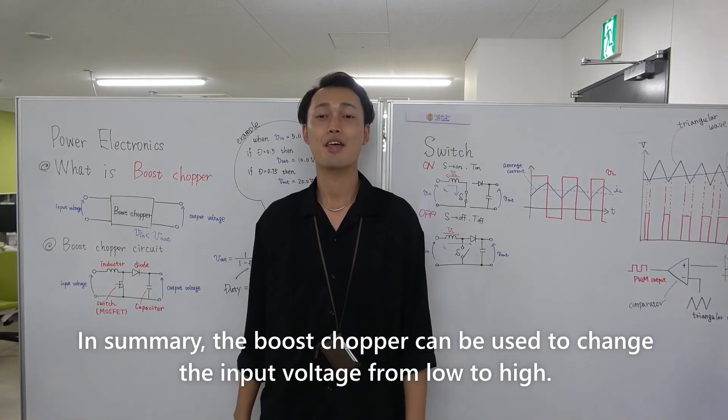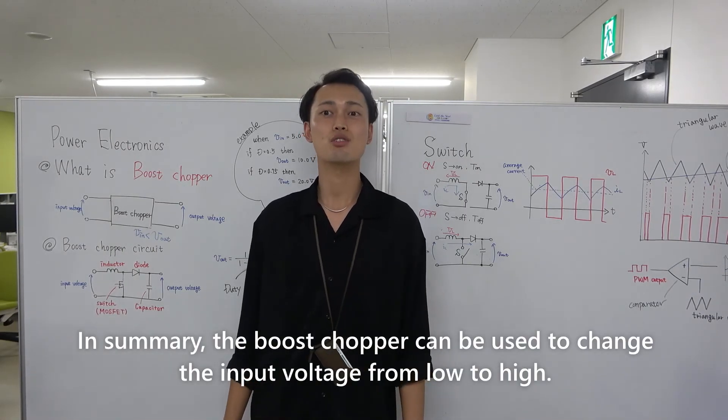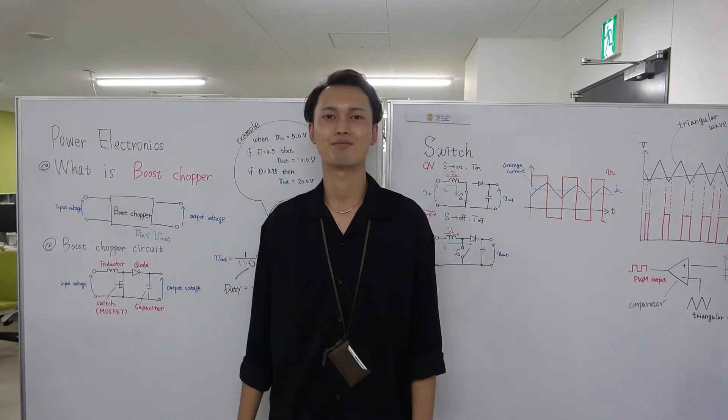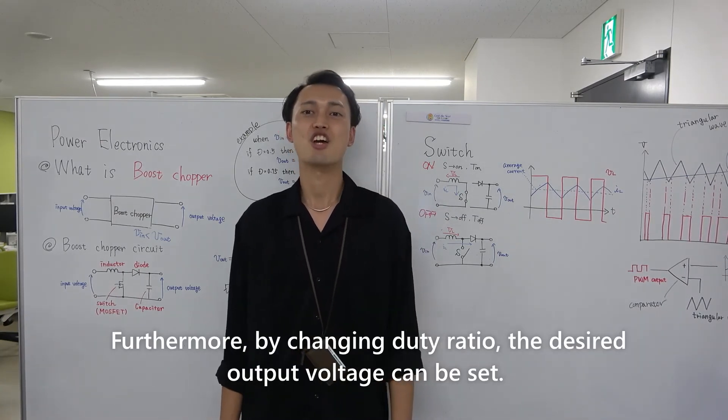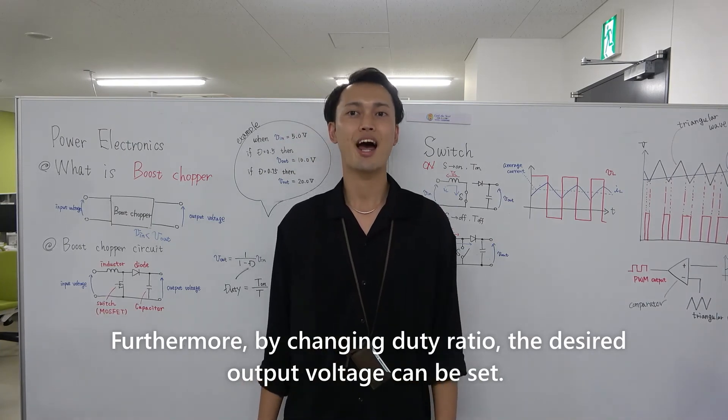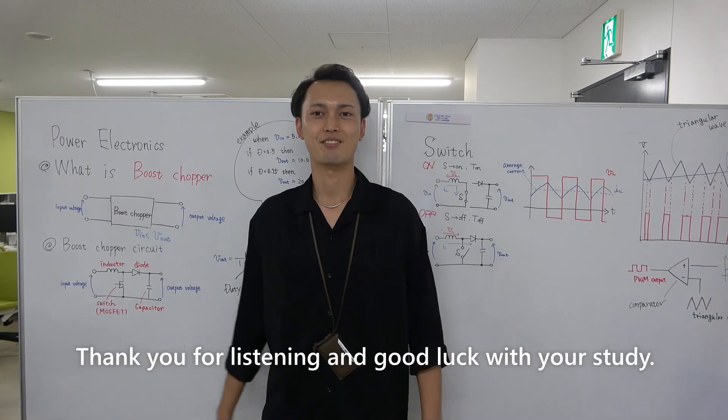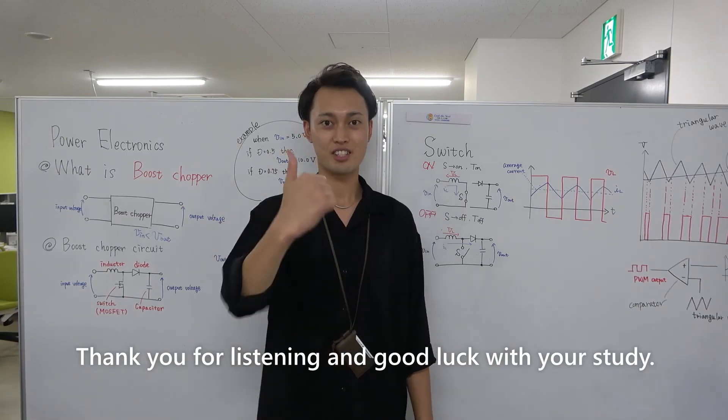In summary, the boost chopper can be used to change the input voltage from low to high. Furthermore, by changing duty rate, the desired output voltage can be set. Thank you for listening. And good luck with your study.